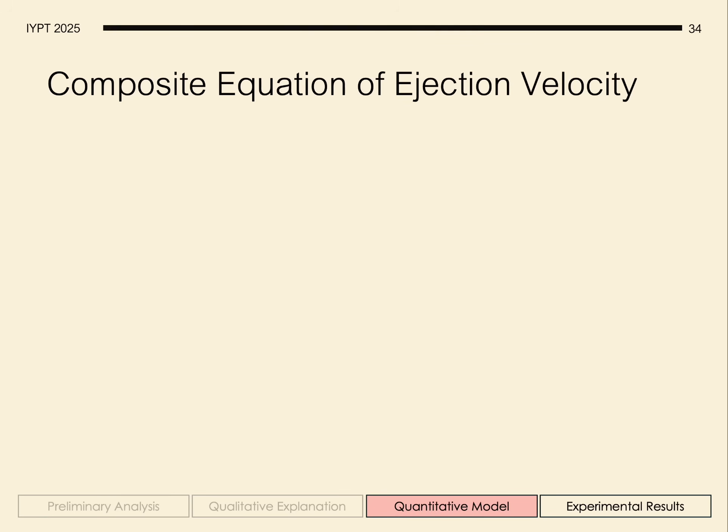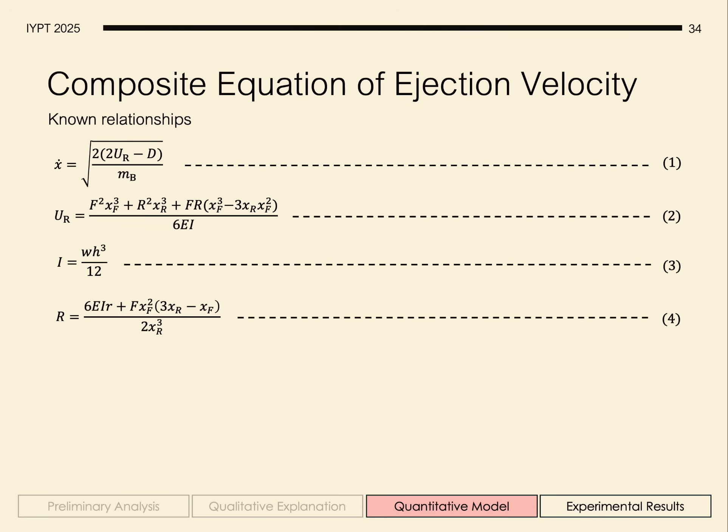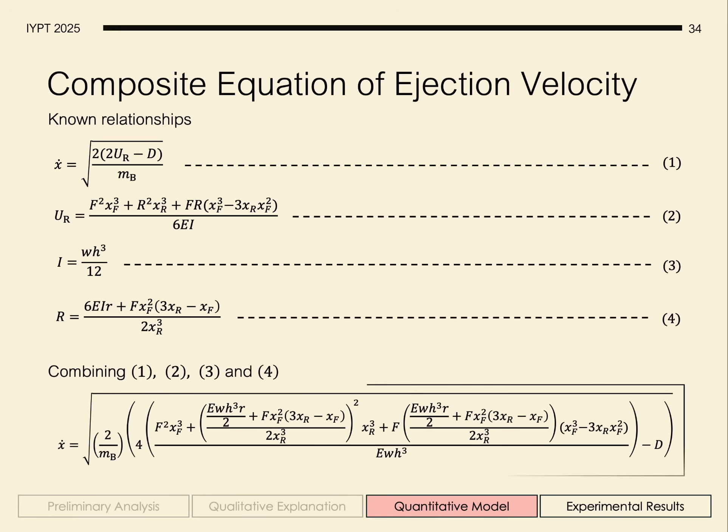Using the equations we've derived so far, and the known equation for the area moment of inertia of a cantilever beam, we can actually find our compass equation for the ejection velocity of our ball.